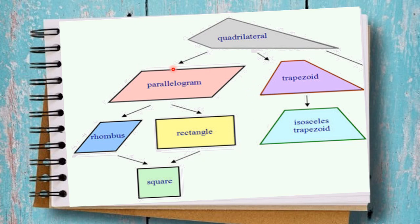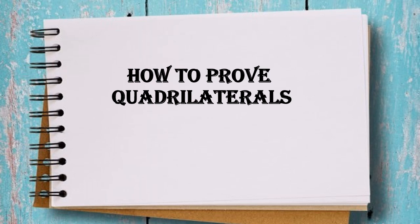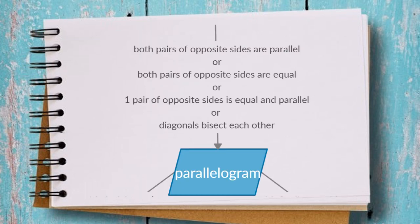In this video we are going to talk especially about these four quadrilaterals: the parallelogram, rectangle, rhombus, and square. We will look at how to prove quadrilaterals according to some given information. Remember, this video does not tell you the properties of each quadrilateral, but it tells you how to prove the nature of quadrilaterals.